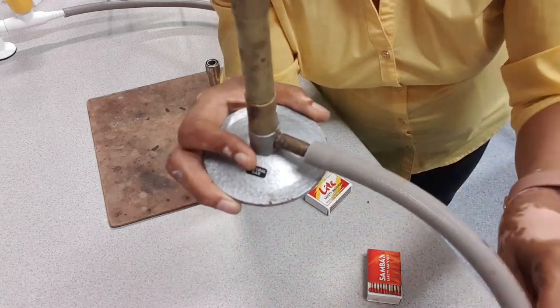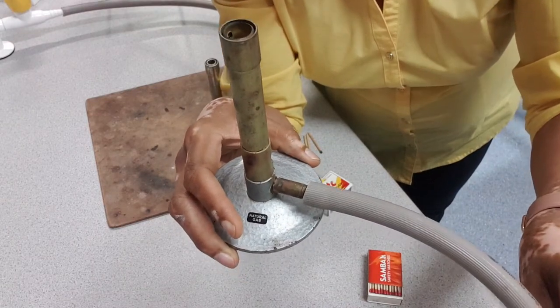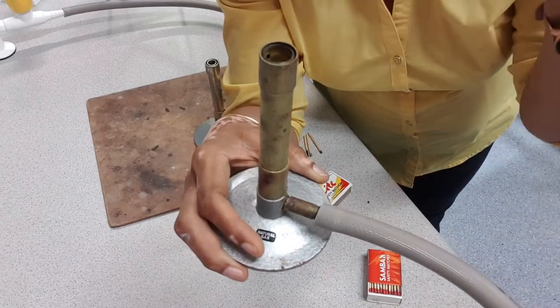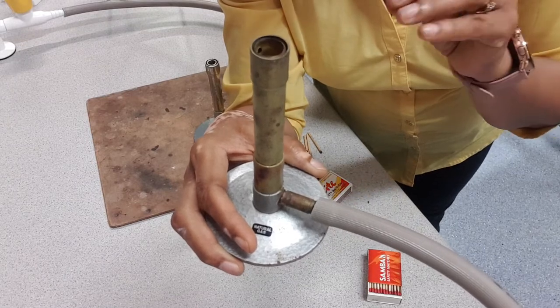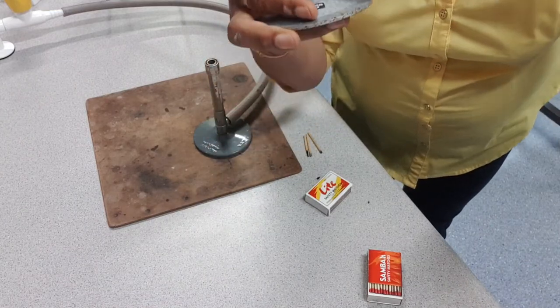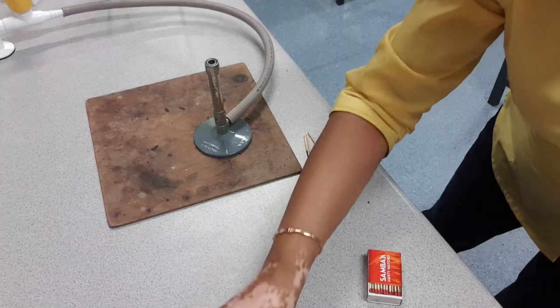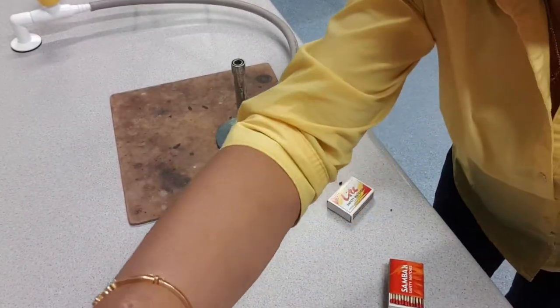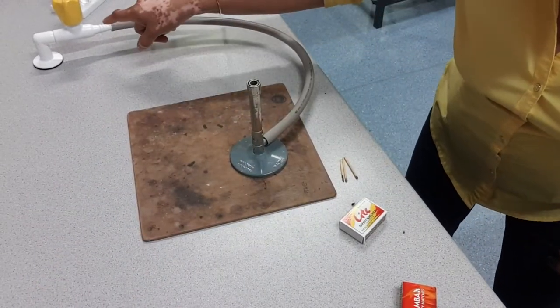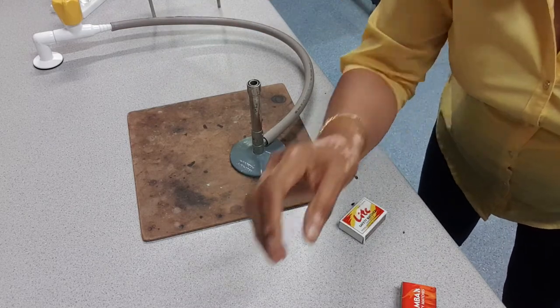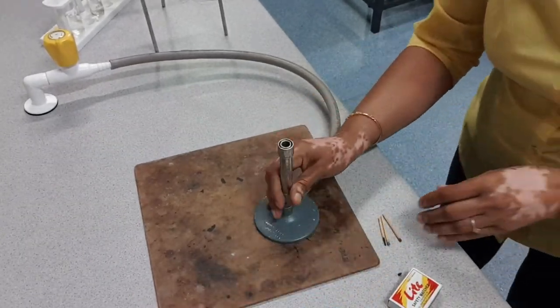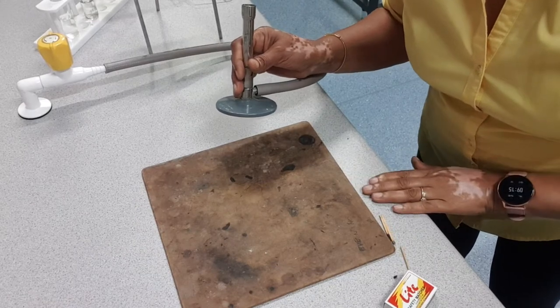Whenever you do an experiment with the Bunsen burner, you've got to make sure your hair is tied, there's no loose clothing, you don't want any books close by, and you need your safety glasses. There are loads of precautions that you must take so you're safe. The Bunsen burner is connected to the gas tap. This lab has a single gas tap per station, whereas your usual lab has two gas taps.